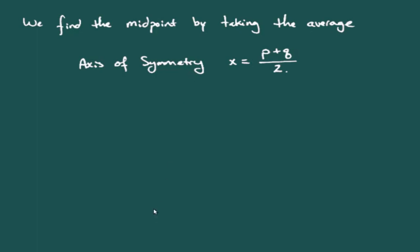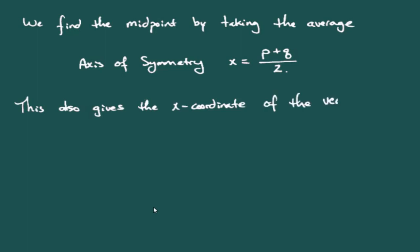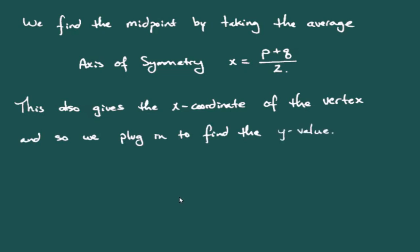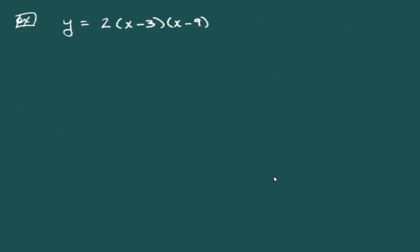The axis of symmetry also gives us the x-coordinate of the vertex. Once we have that x-coordinate and our original equation, we just plug the x-coordinate in for x to find the y-value of the vertex.